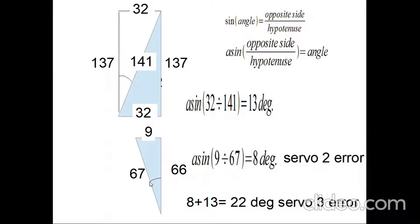For the bottom triangle, servo 2, instead of being directly vertical, is actually leaning 8 degrees to the left. For the upper triangle, if servo 3 were in line with servo 2 with no error, it would be pointing off in that direction — leaning over to the right by 13 degrees. So it's the 8 degrees leaning to get to vertical plus the 13 degrees leaning to the right, meaning servo 3 has a total error of 22 degrees.